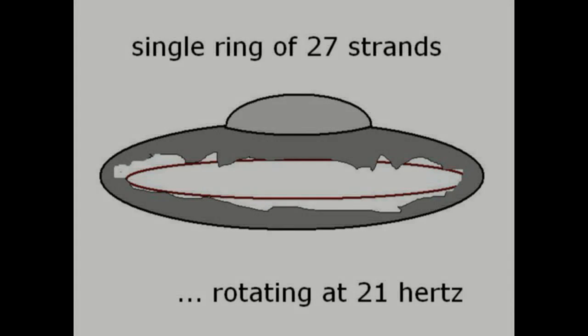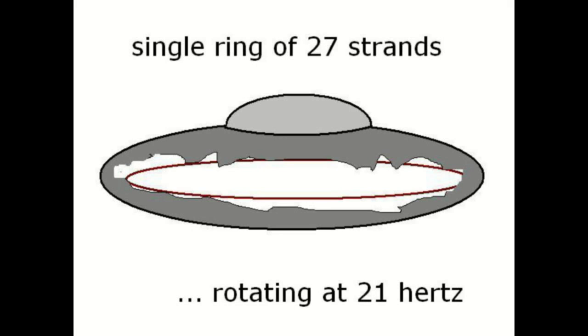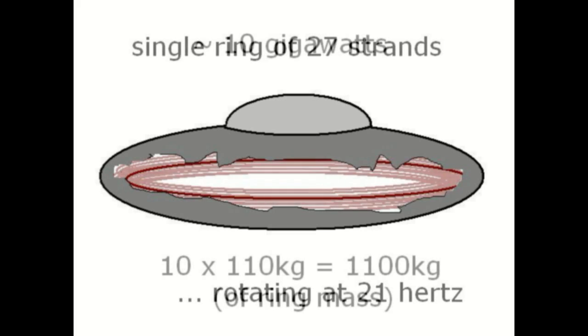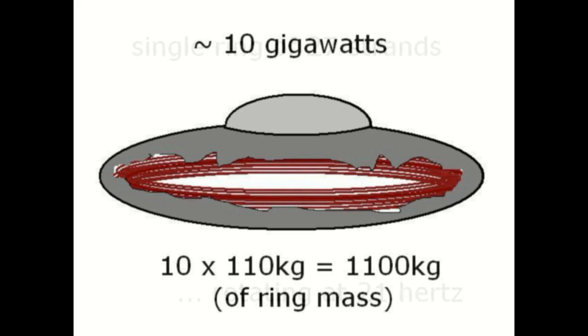If we want more acceleration, or if the process is not efficient, we simply need to add more strands to the ring until we get enough newtons to do the job. For instance, if we want to increase by tenfold the number of newtons, we put nine more 27 strand bundles of carbon nanotubing into the craft, thus increasing the ring's mass to 10 times 110 kilograms equals 1100 kilograms of ring mass.